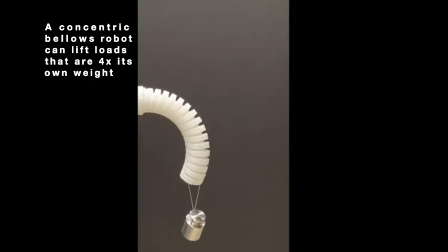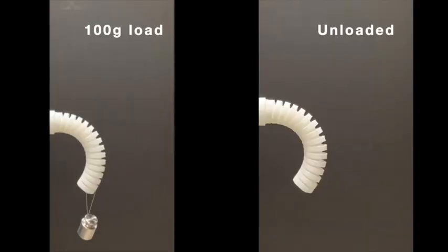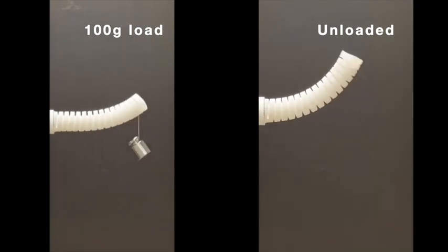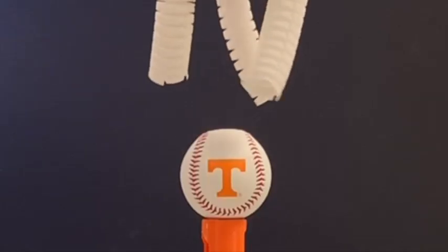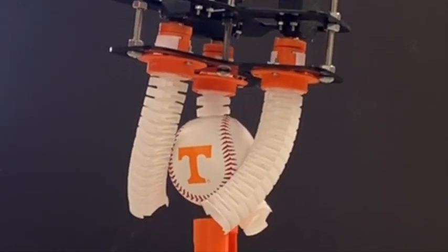A concentric bellows robot can lift loads that are four times its own weight. The current prototype can lift 100 grams with minimal deflection. This payload capacity could be useful for a variety of soft robot applications.